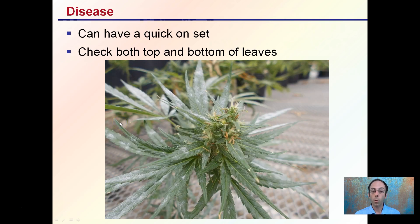A disease can have a quick onset. You want to be sure you're checking both the tops of the leaves and also the underside of the leaves, where many diseases will start.